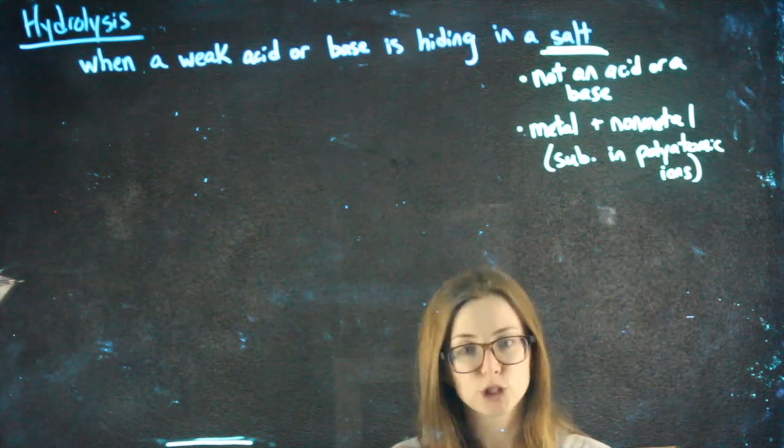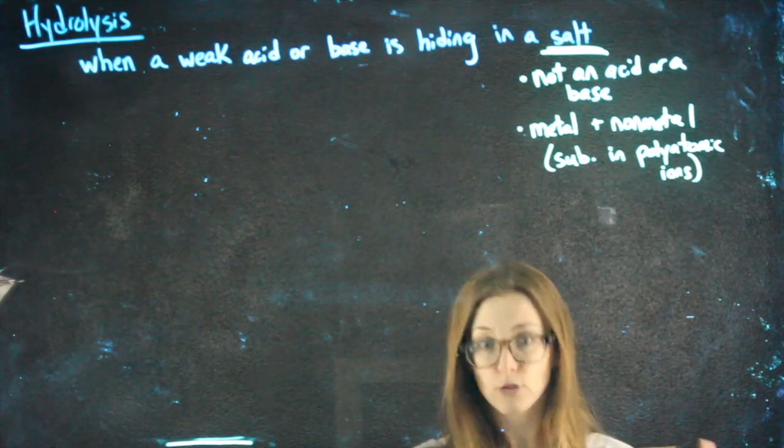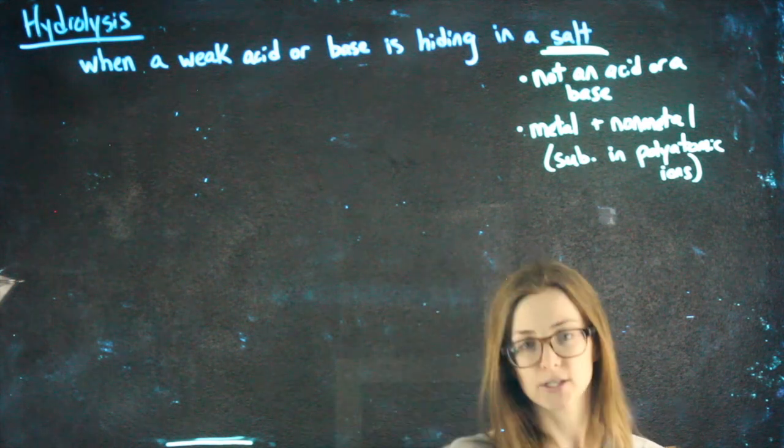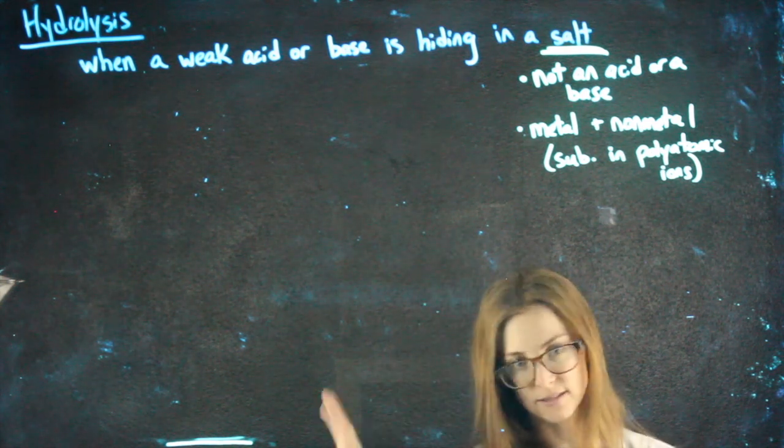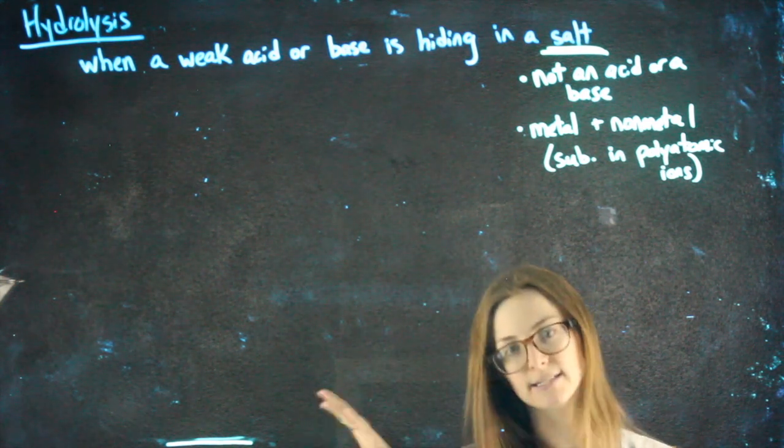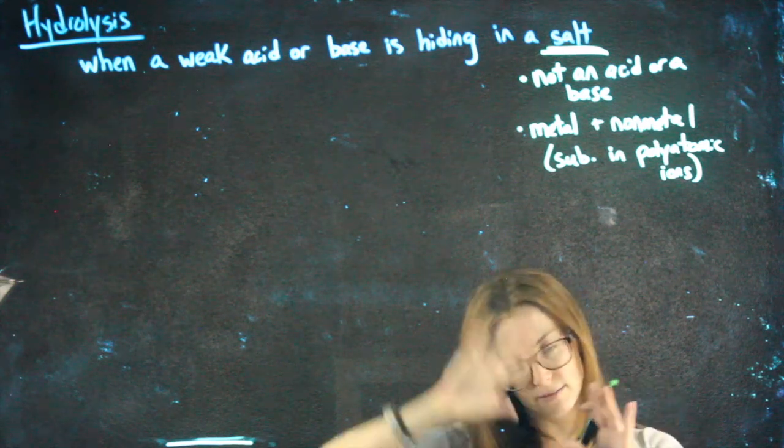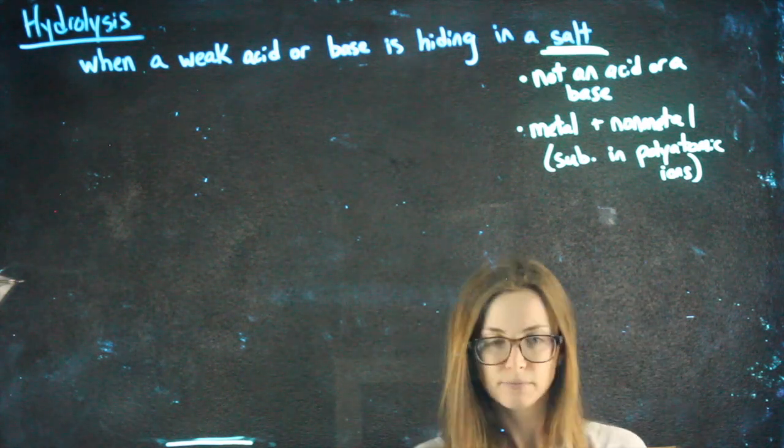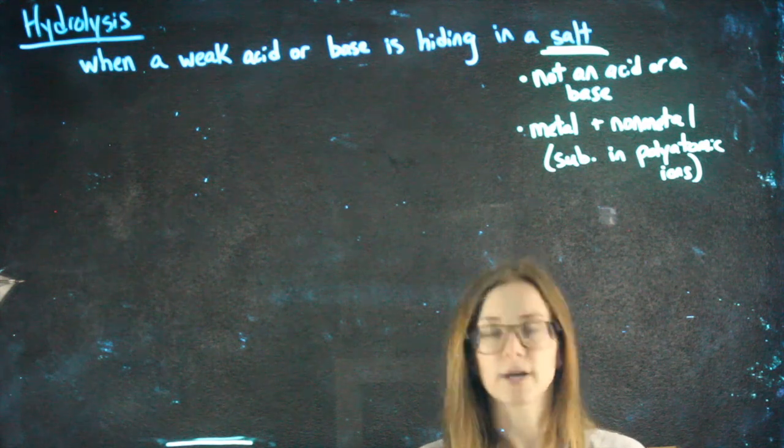So for example, NH4NO3, both are polyatomic ions. That would be a salt. It's not an acid or a base that we know, but it does have a metal and a non-metal, meaning two polyatomic ions.